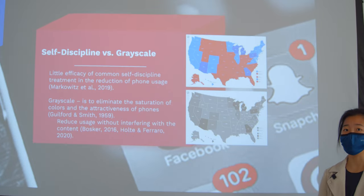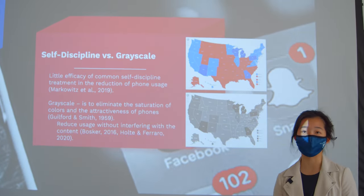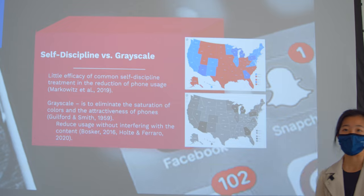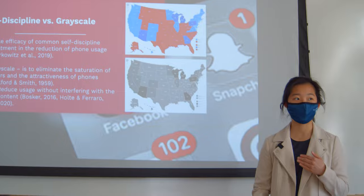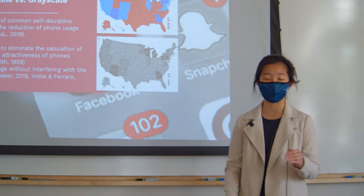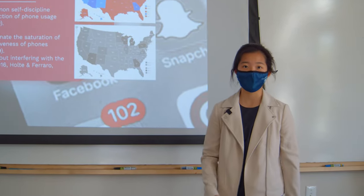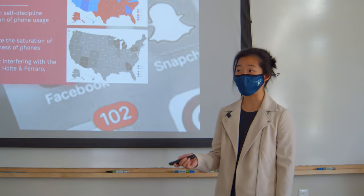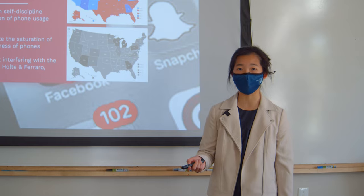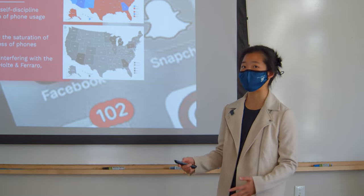The traditional method of curbing phone usage is through self-discipline, meaning I will tell myself I will stop using Instagram after 15 minutes, but that doesn't really work. So an alternative method for self-discipline would be to use phone on grayscale.